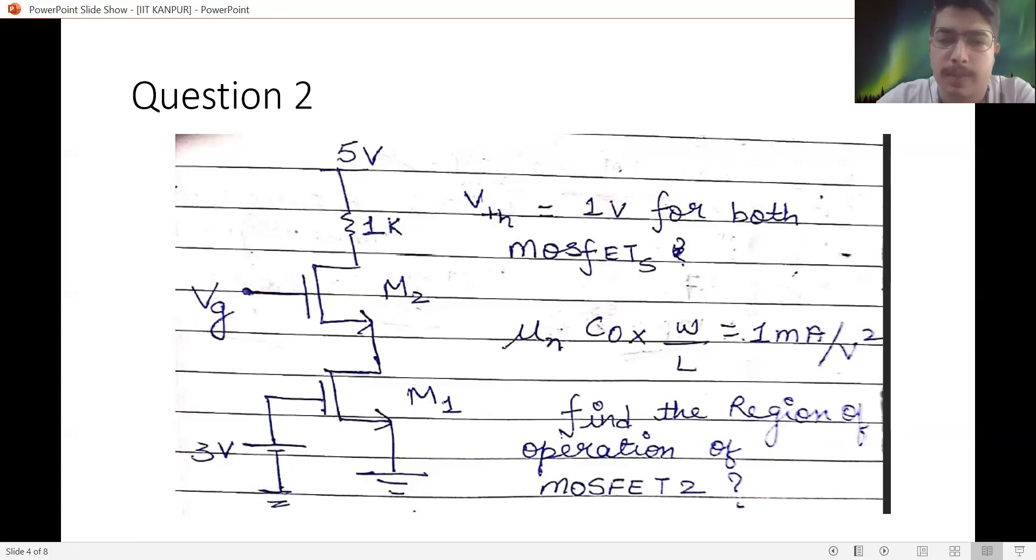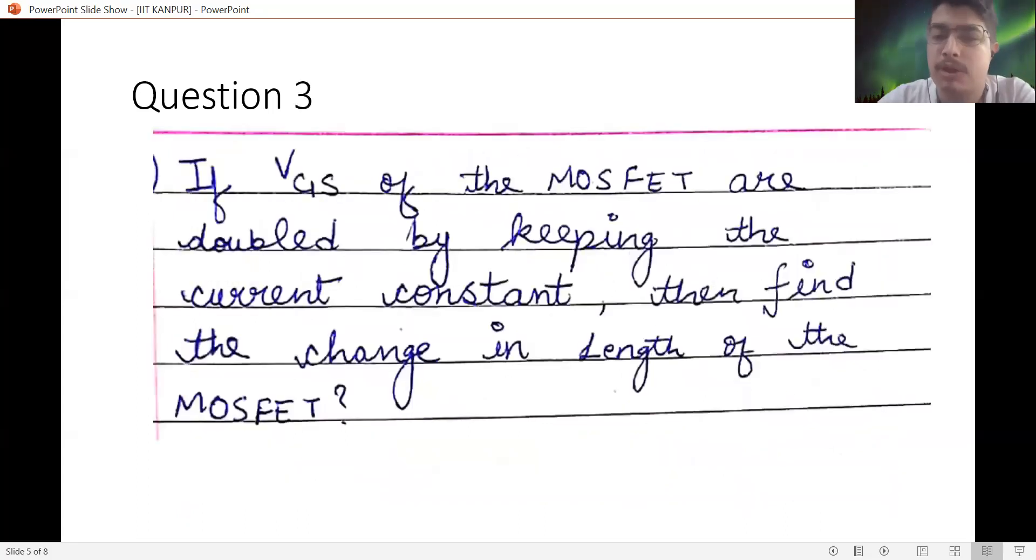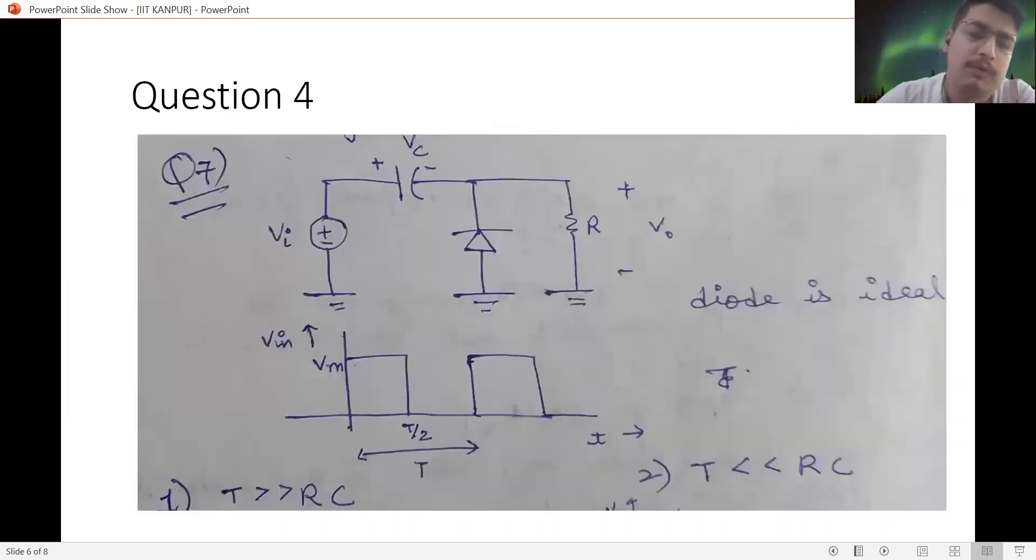Later he continued his question and asked about the VGS of the MOSFET. On doubling the length, what is the effect on the current? And like that, there were different questions that were asked. This was one of the questions.